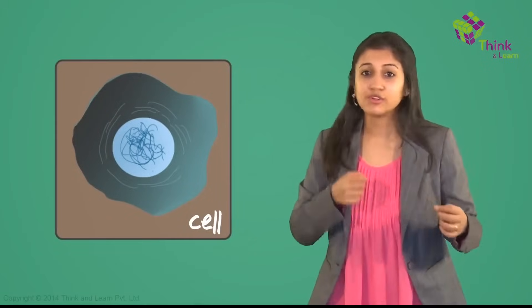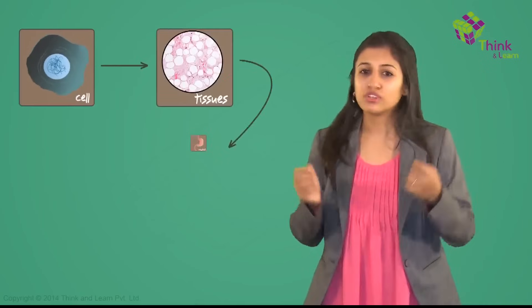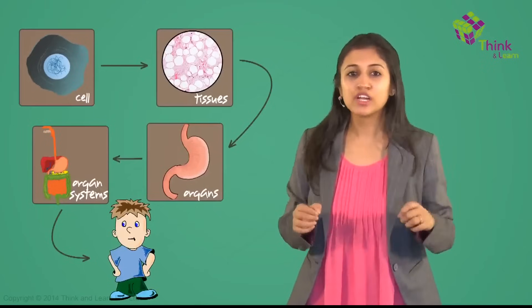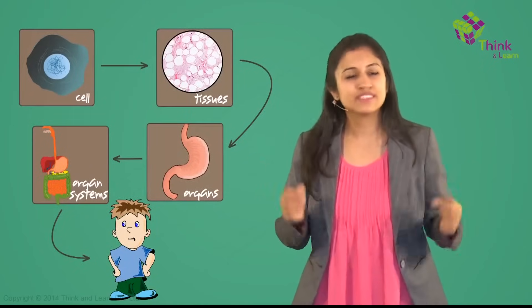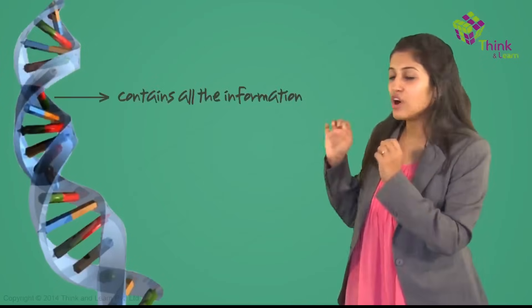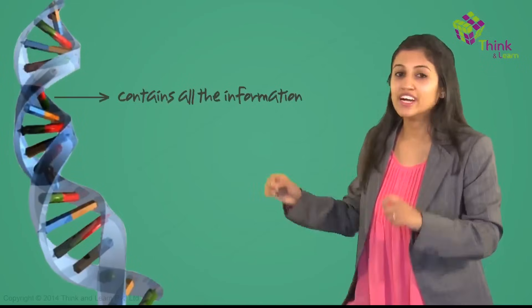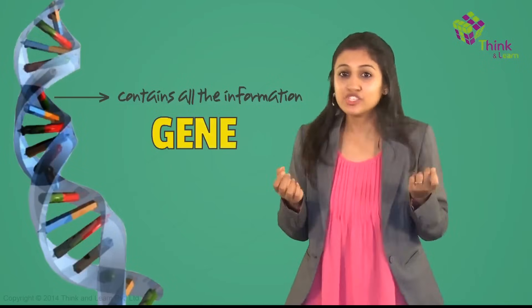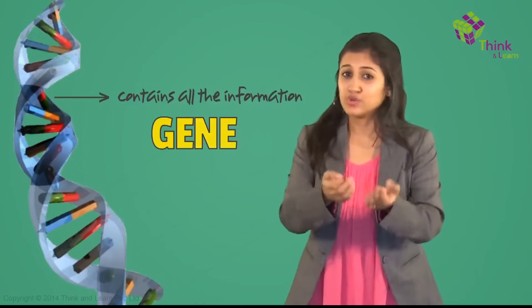Since life starts as a single cell, it keeps on dividing to produce new cells which come together to give you tissues, organs, and organ systems. All the information required to form these is found in the DNA. The cells in your body keep dividing so that this important genetic information is passed on, and the portion of the DNA segment that contains all this information is called a gene. We look a bit like our parents because of our DNA.